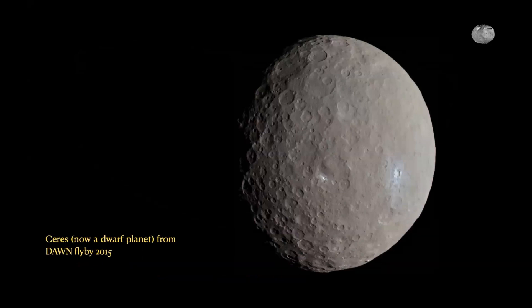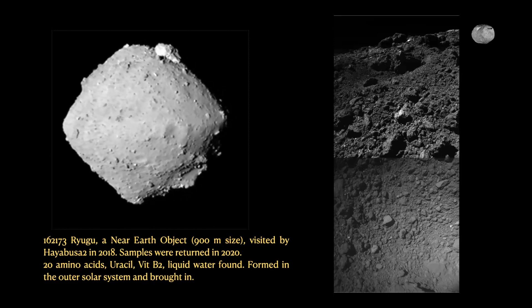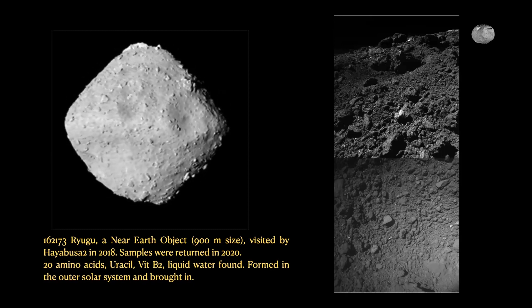Ceres is the biggest asteroid — now called a dwarf planet because of the drama with Pluto. This image was taken by Dawn, which flew by Ceres in 2015. Ryugu is a very famous asteroid visited by Hayabusa 2, which dug in and got samples returned back to Earth. They found around 20 amino acids, vitamin B3, uracil — which is found in RNA — and liquid water. This was formed outside in the early solar system and brought in by gravity. Hayabusa took many photos of Ryugu rotating.